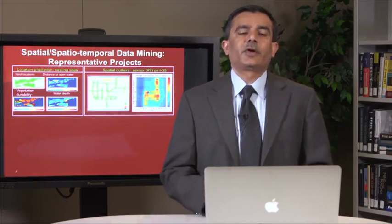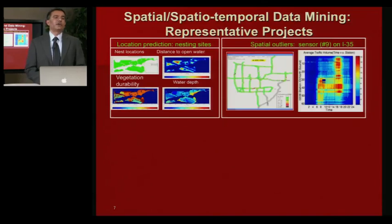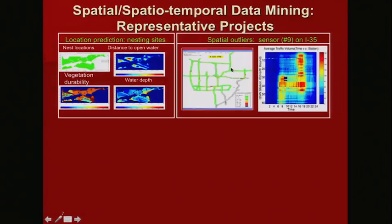Another project shortly afterwards was spatial outlier detection. You probably remember this diagram — the freeway map of Twin Cities and the data from I-35W shown here. Sensor number 9 was behaving very differently from its neighboring sensors, and this discontinuity was formulated as a spatial outlier.